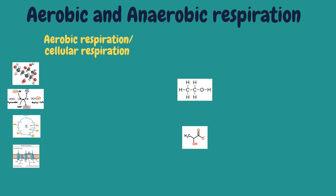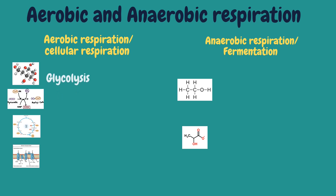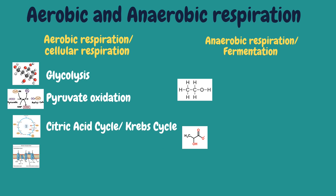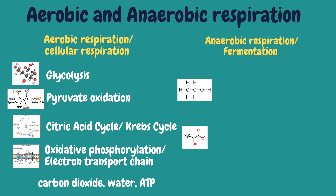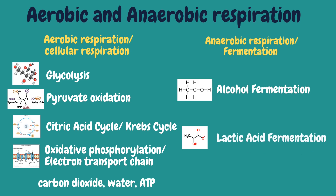Aerobic respiration is a process that requires oxygen, while anaerobic respiration does not require oxygen. Aerobic respiration starts with glycolysis, followed by pyruvate oxidation, then the Krebs cycle, and the last stage is oxidative phosphorylation. These four stages produce carbon dioxide, water, and ATP. On the other hand, there are two types of anaerobic respiration: alcohol and lactic acid fermentation, which create ethanol and lactate or lactic acid.